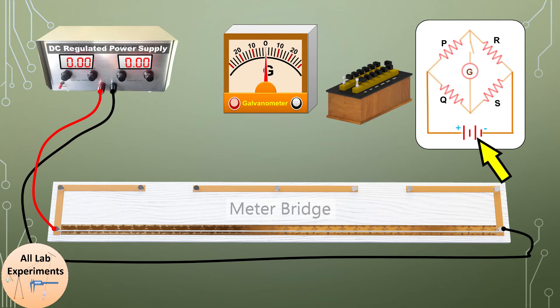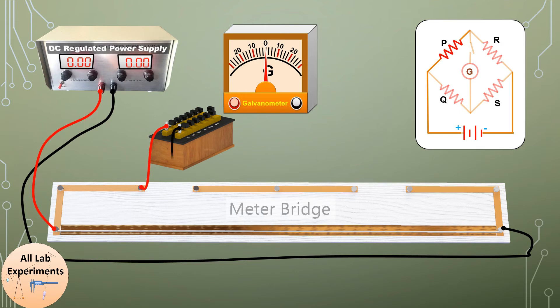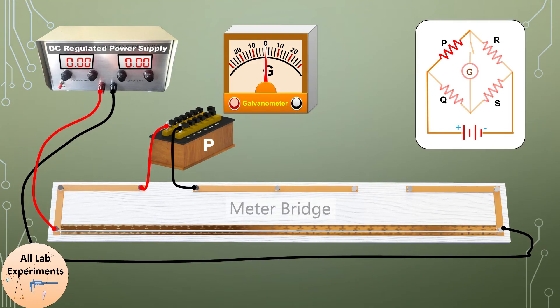Now in the next part we are going to take this resistance box and connect this at the place of resistor P, so now we can apply any desirable resistance using this resistance box. Next, in the second slot towards the right end we are going to place this unknown resistance. In the diagram you can see that P and R resistances have been highlighted.